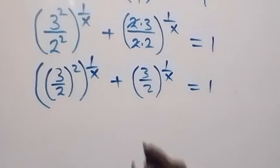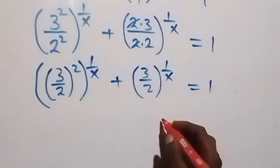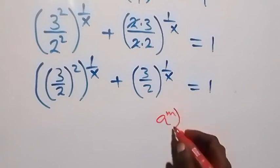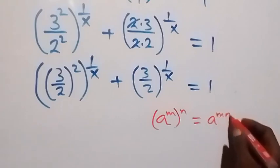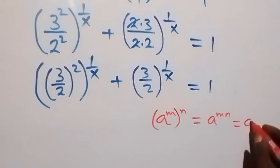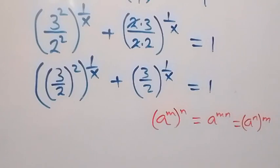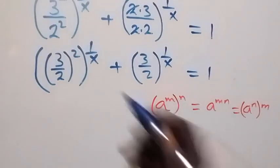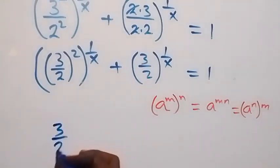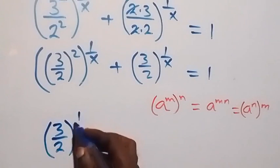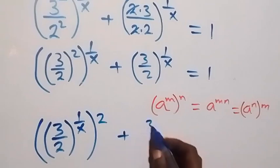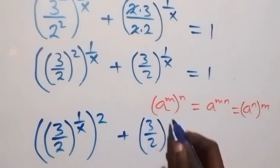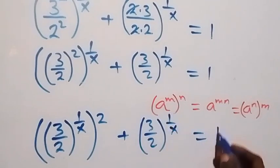Applying the law of indices: a raised to power m, raised to power n, equals a raised to power m times n. From here it implies that we can interchange this as (3 over 2) raised to power 1 over x, all raised to power 2, plus (3 over 2) raised to power 1 over x, equals 1.